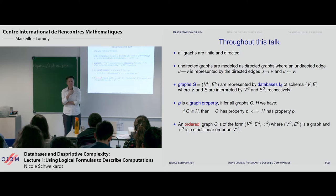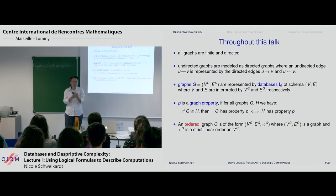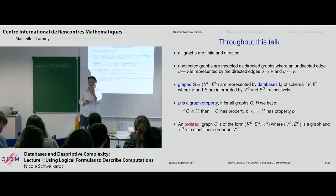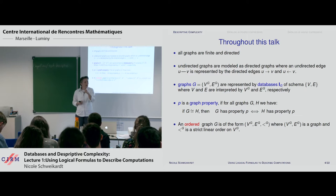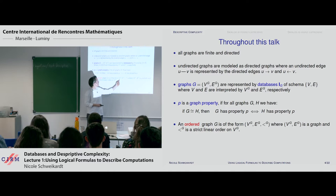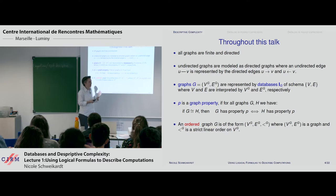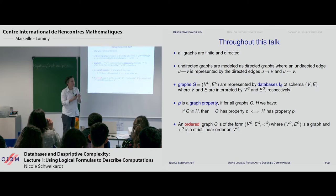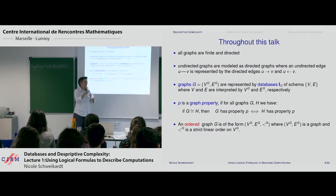When you deal with algorithms, you always have to input some representation of the graph, and this representation has an order. If you do adjacency matrices, you identify the nodes with numbers 1 up to n, and on those numbers you have an order. When you want to do a connectivity check, you don't want the outcome to depend on which way you chose to identify the nodes with the numbers.